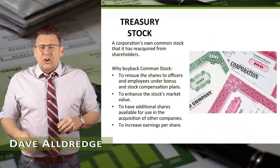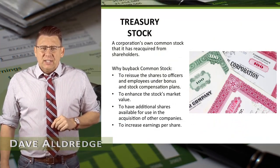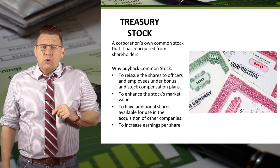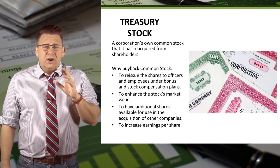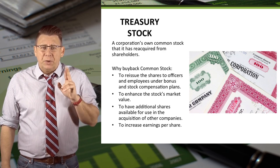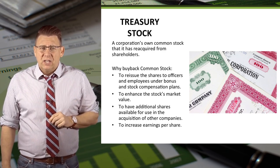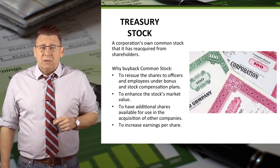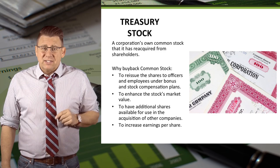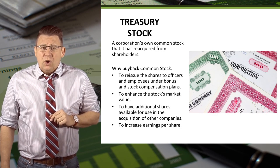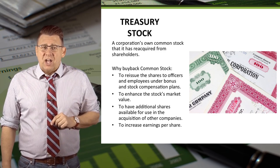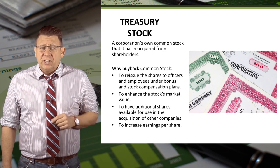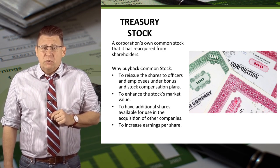Treasury stock is not a third kind of stock. It is a company's own common stock that it has reacquired. There are a number of reasons why a company might repurchase its own common stock. A few reasons are listed here on the slide, including signaling the market that they think the stock is a good value, needing shares for employee compensation plans, and potentially trying to prevent takeover bids from corporate raiders.